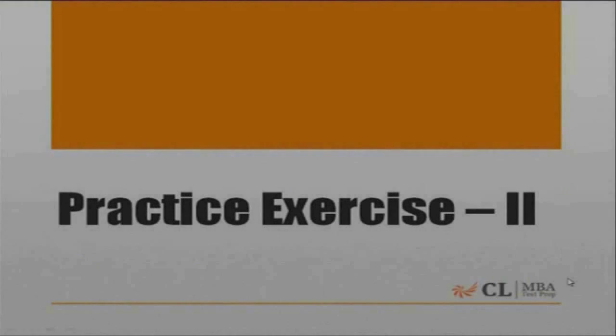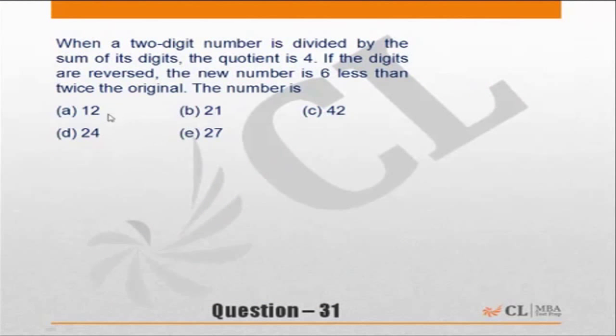Okay, let's do practice exercise 2, question 31. When a two-digit number is divided by the sum of its digits, the quotient is 4. If the digits are reversed, the new number is 6 less than twice the original. Which is the number? Now, typically the conventional method will be to assume a number in the form of AB.